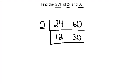12 and 30 are also once again both even, so 2 goes into both of those. 12 divided by 2 is 6, and 30 divided by 2 is 15.